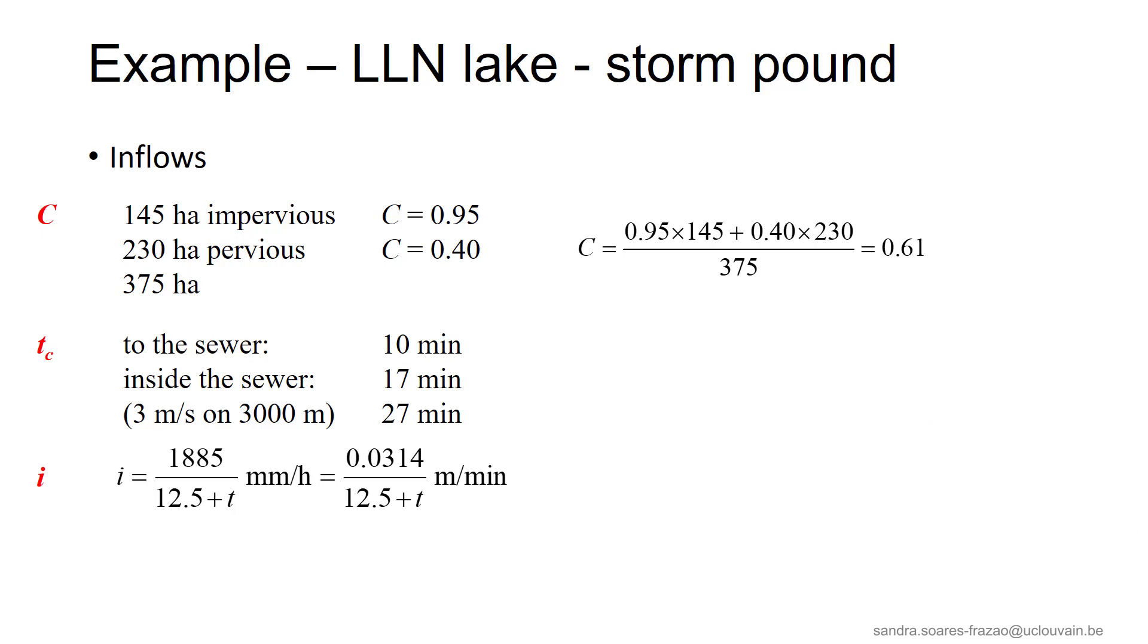Using the Talbot formula to calculate the rain intensity, with the coefficients a and b given here, corresponding to a return period of 10 years, we obtain this expression here, leaving the rain duration t as a parameter. So, with this, we can express the volume Ve entering the lake as a function of the rain duration t.